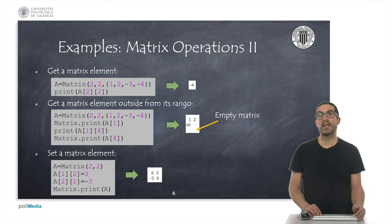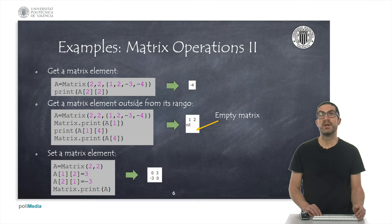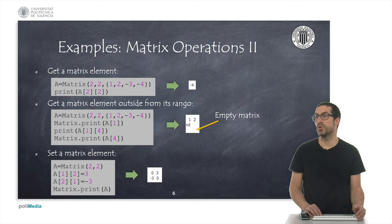If we try to access a row that doesn't exist, it will return an empty array. To set a specific element of a matrix, we can also use the square bracket operators.